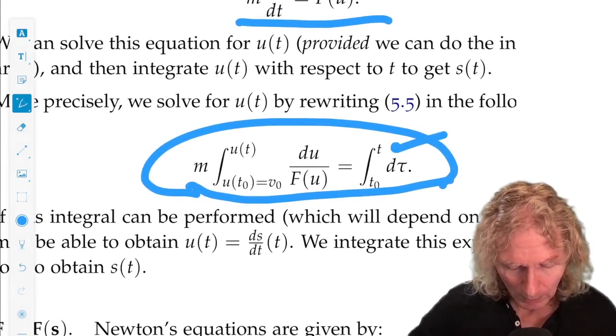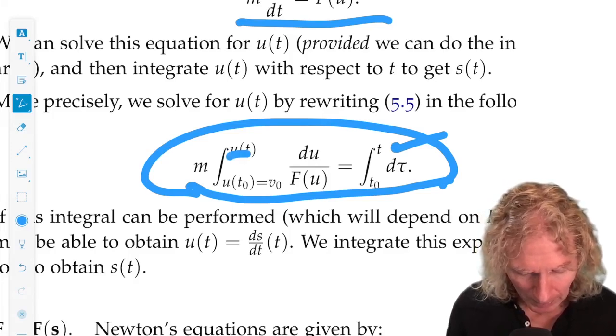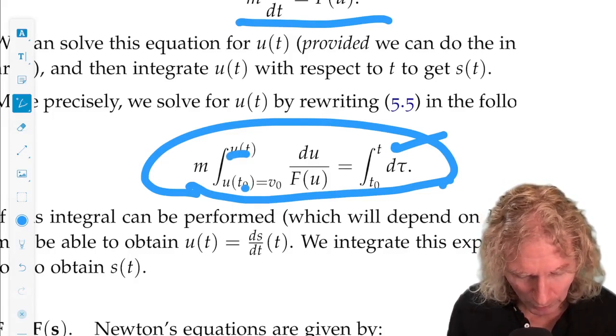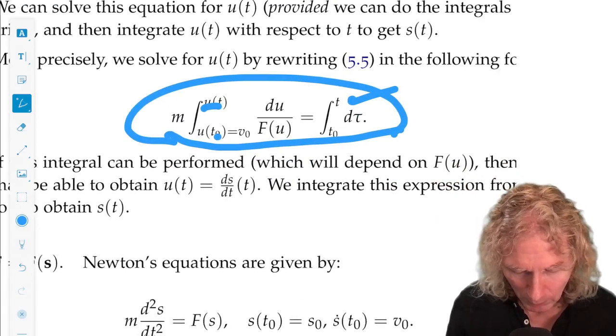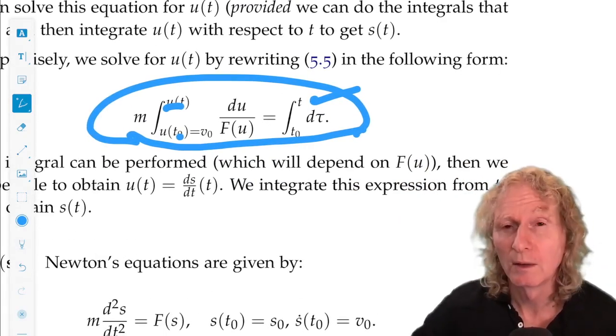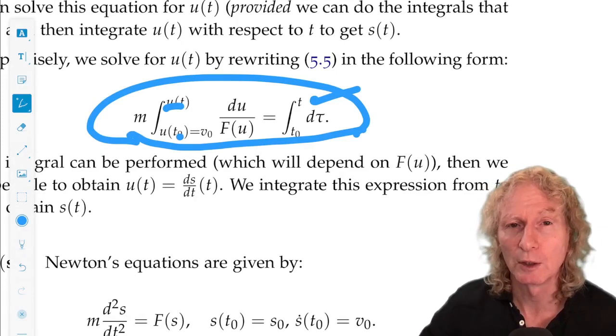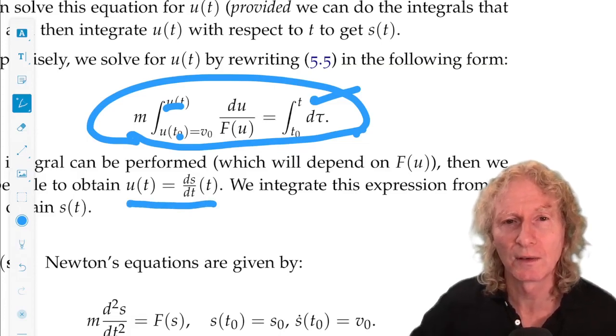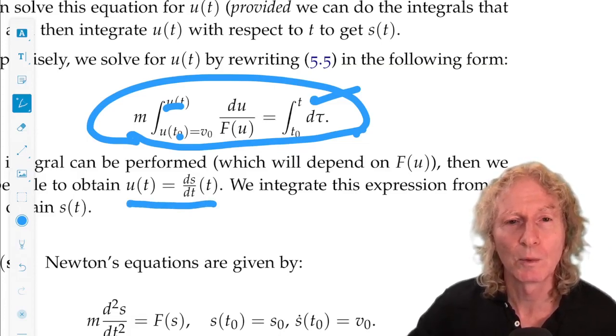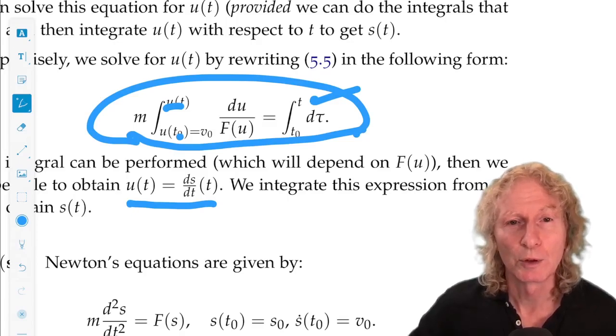But if we could integrate it, we would get an implicit expression for u of t. If we could solve that for u of t, we would then end up with a solution, u of t, which, remember, in our original substitution is ds dt. And then we would integrate that one more time. And we get the solution, s of t.